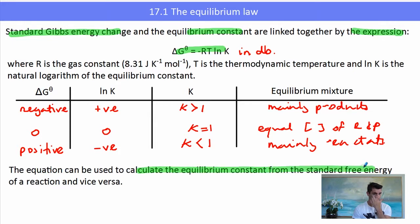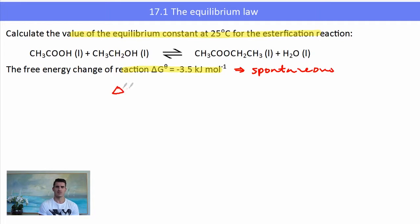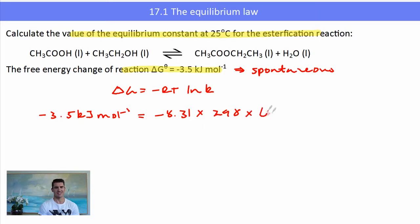Here is an example where we need to calculate the equilibrium constant when given the free energy change delta G. We have been given the reaction and are asked to find K. The delta G is -3.5 kJ/mol, which indicates a spontaneous reaction, so the K value should be greater than 1. Substituting into delta G = -RT ln K: -3.5 kJ/mol = -(8.31)(298) ln K. Since the gas constant is in joules, we convert to get -3500 J/mol = -(8.31)(298) ln K.